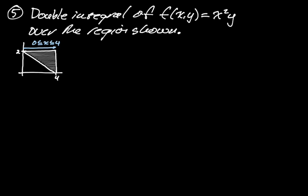X goes from 0 to 4. Y likes to go from bottom to top, so we're going from this linear function going from (0,2) to (4,0), all the way up to y = 2. I need the equation of this line, which is just 2 − ½x. So y is going from the bottom region, which is 2 − ½x, up to the top of the region, y = 2. So our inequality for y is from 2 − ½x up to 2.